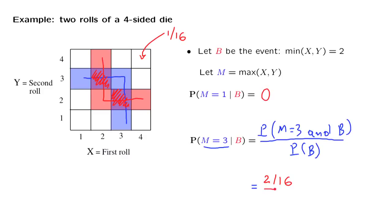How about the denominator? Event B consists of a total of five possible outcomes. Each one has probability 1 over 16, so this is 5 over 16. So the final answer is 2 over 5.